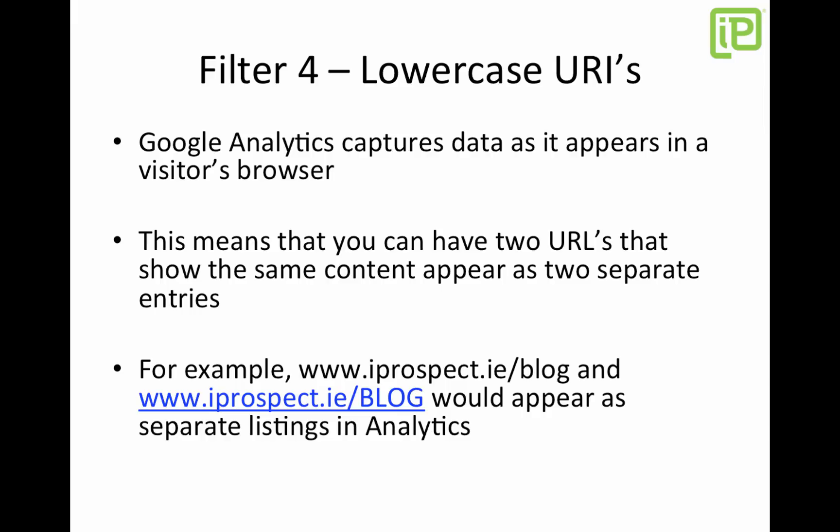The fourth filter is a bit of a technical one — it's for filtering lowercase URIs, basically the extensions of your URL. Google Analytics captures data as it appears in a browser, so you can have two URLs that show the same content appear as two separate entries. For example, if someone typed 'iprospect.ie/blog' in lowercase and someone else in uppercase, these would appear as two separate visits — doubling up on page views.